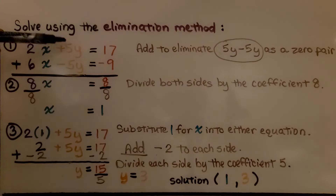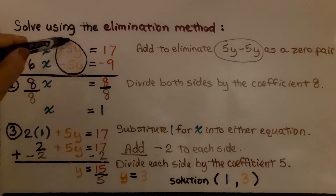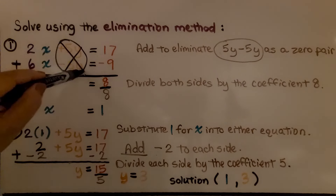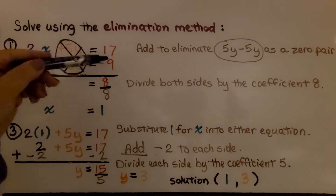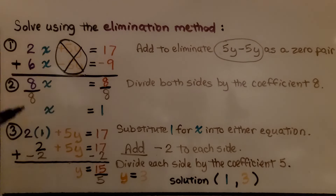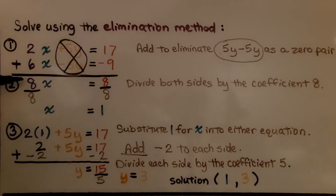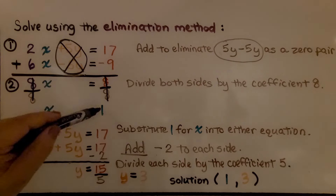We add five y plus negative five y — same as subtracting — to create a zero pair. Since we're adding, two x plus six x gives us eight x. And 17 plus negative nine is positive eight. So we have eight x equals eight. Dividing both sides by the coefficient eight, we get x equals one.